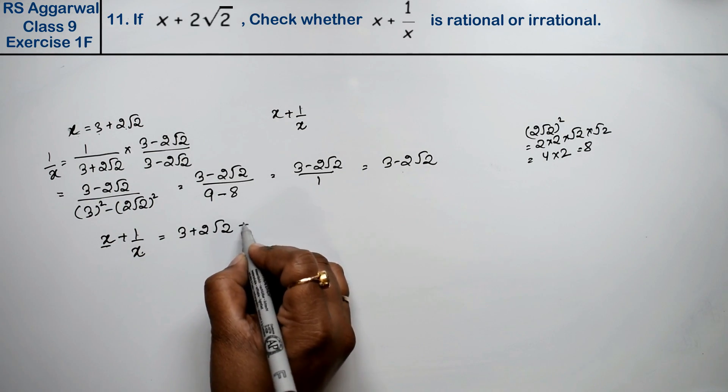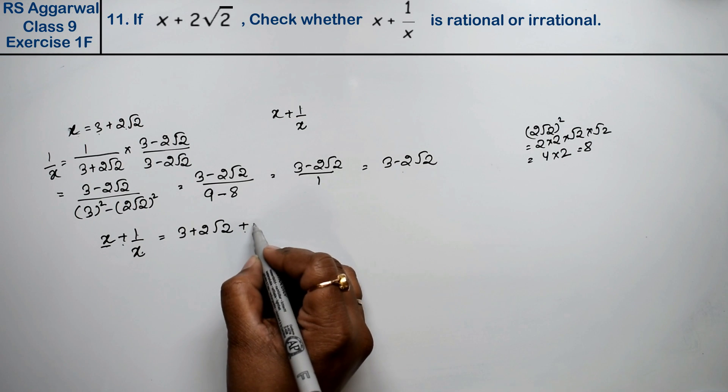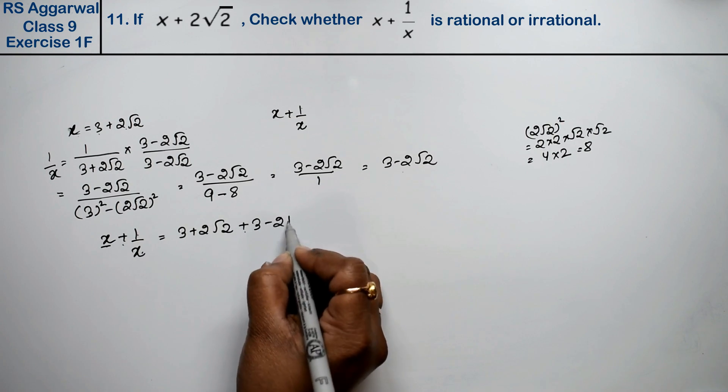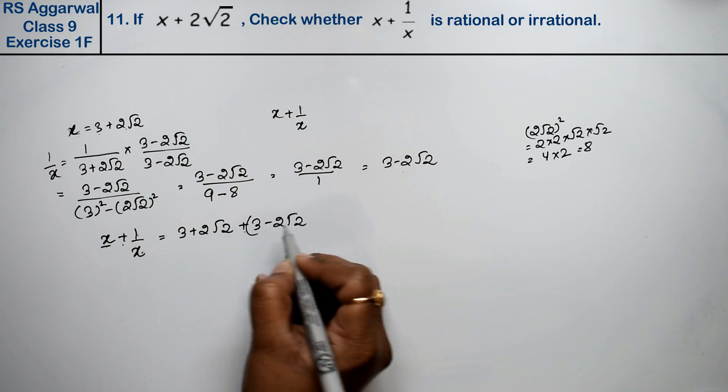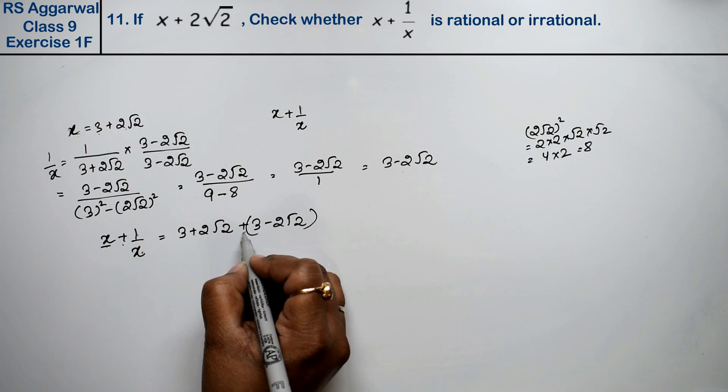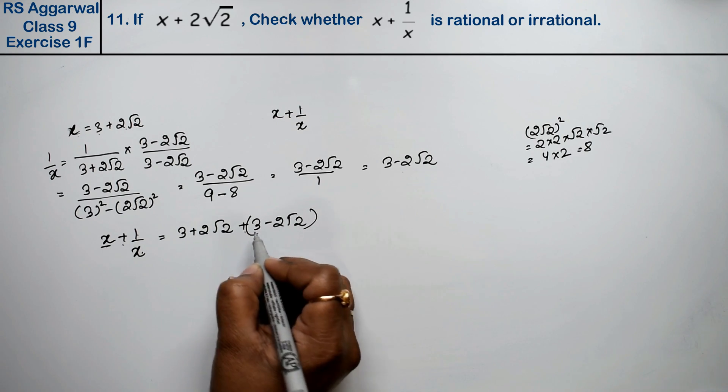Plus 3 minus 2 root 2. I am holding this in bracket so that the minus is also clear, so you are not confused.